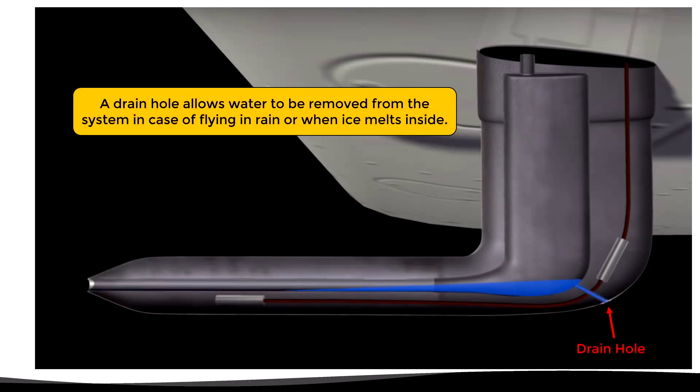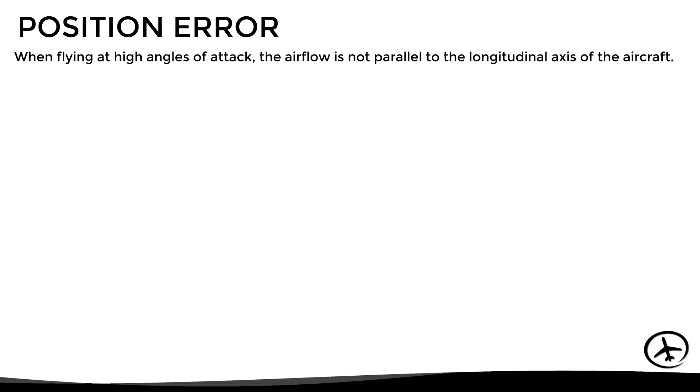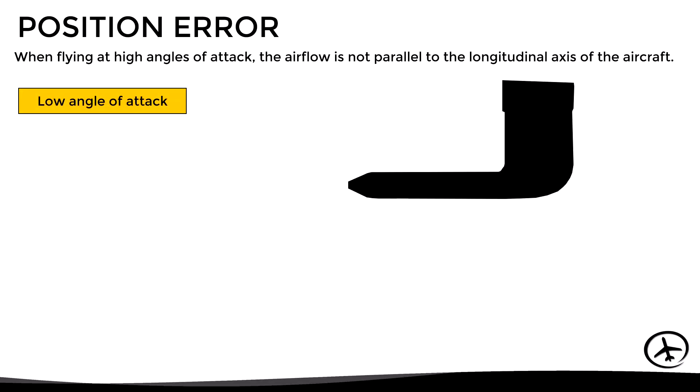Another component of the pitot tube is the drain hole — a small hole in the back of the tube that allows water to be removed from the system in case of flying in rainy conditions or when melting ice using the pitot heat. While this pitot tube is designed to eliminate any possible errors in pressure measurement, there are some errors that cannot be eliminated: the so-called position errors. When flying at high angles of attack, the airflow that hits the aircraft is not parallel to the longitudinal axis, and therefore not parallel to the pitot tube. At low angles of attack the airflow is practically aligned with the pitot tube, giving a fairly adequate total pressure measurement.